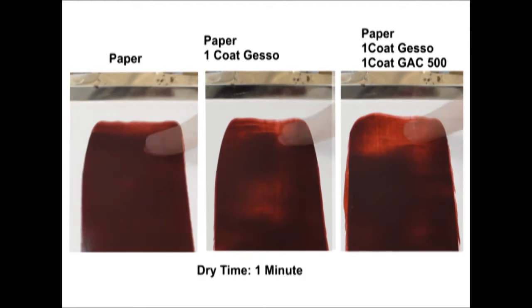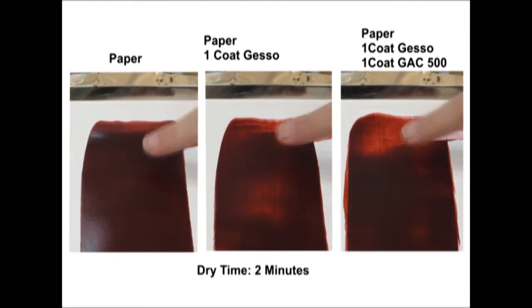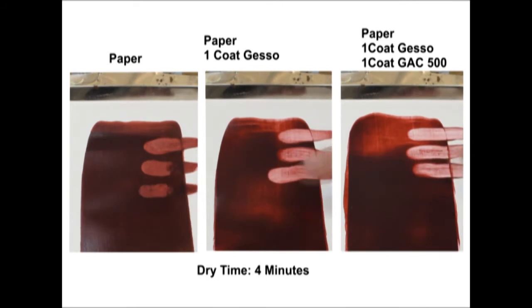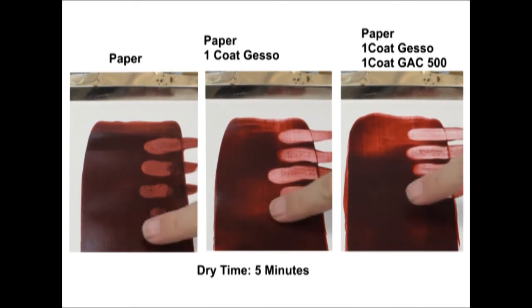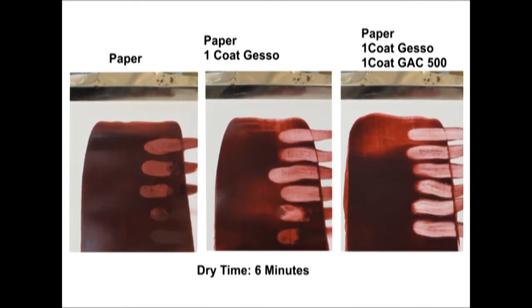It is not often considered as being important, but as we will illustrate, it makes a big difference when working thinly. We created three common surfaces with varying degrees of absorbency and applied a 3mm thick layer of heavy body paint onto each one.